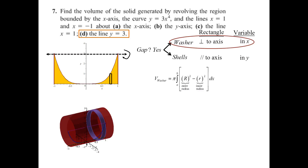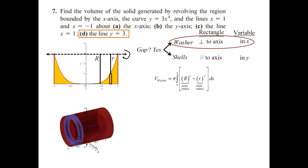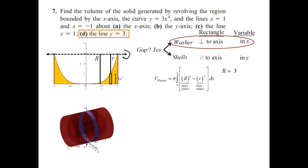Here's what the picture looks like — an animation of 10 discrete washers showing the volume. We need the outer radius, which goes from the axis through your region, and the inner radius, which goes from the axis of rotation just up to the top of the rectangle. The outer radius will be a constant: 3. For the inner radius, we subtract the height of the rectangle from 3: 3 minus 3x⁴. That's how we get the value of the inner radius.